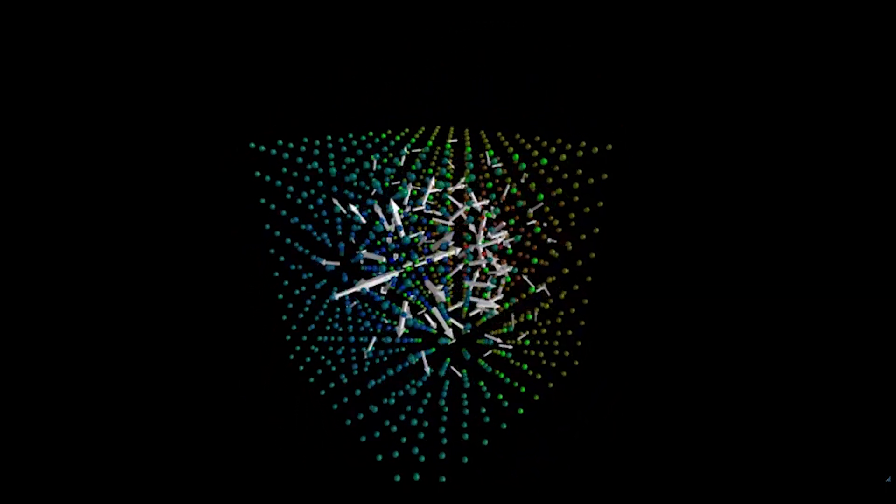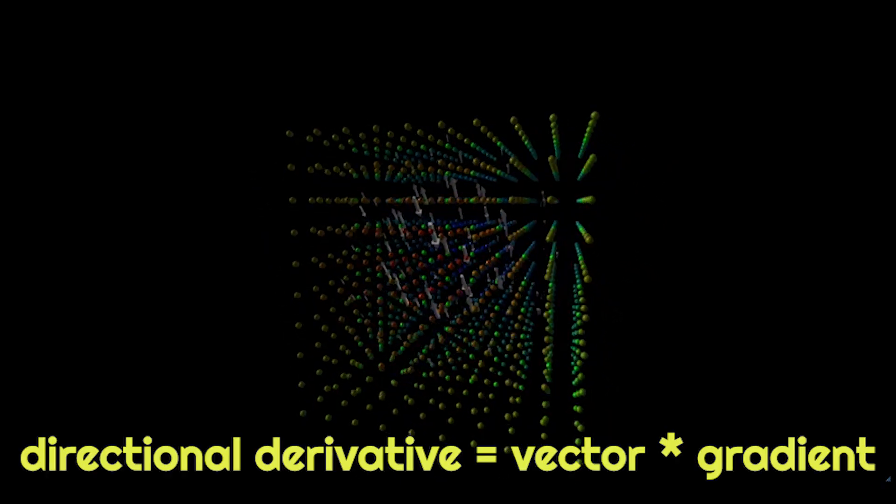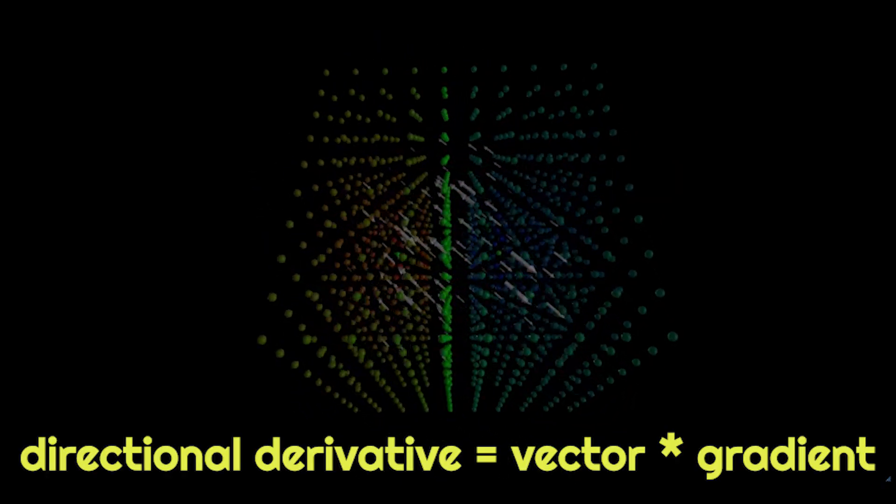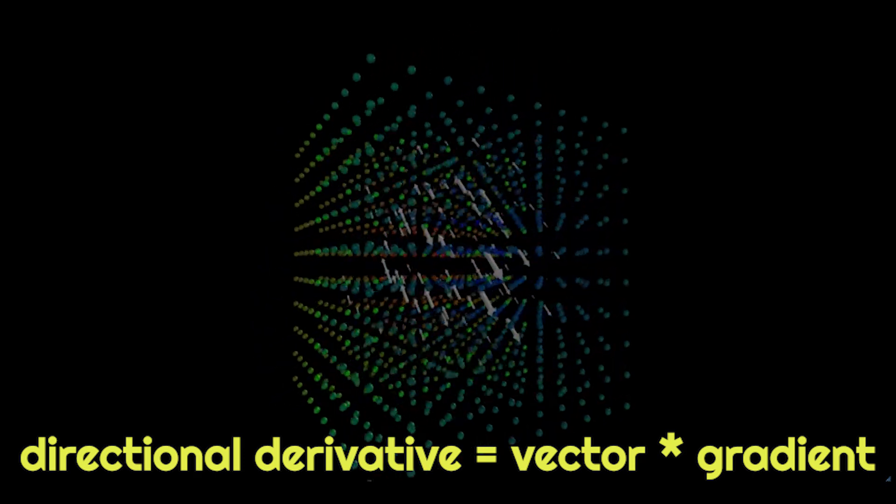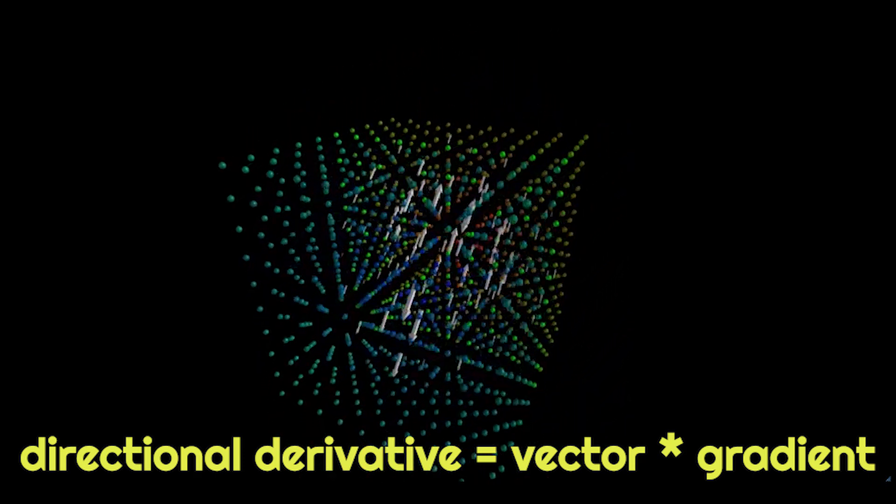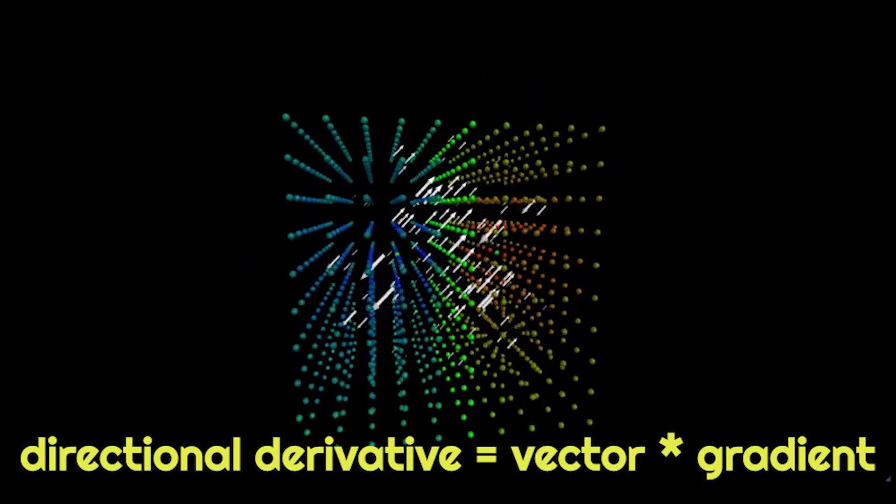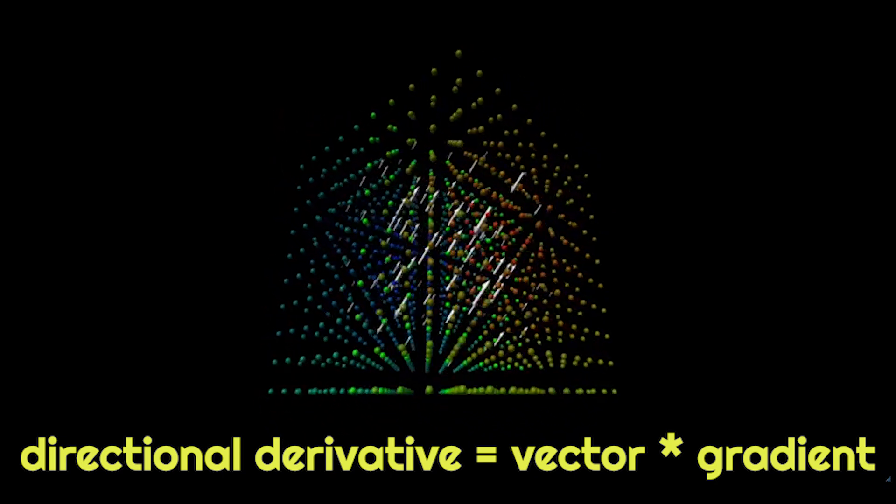But sometimes you want to know the derivative in a particular direction. For this we need our friend from the previous video the dot product. If you take the dot product of a vector with the gradient at a point in space you can find the slope of the scalar field at that point in that direction. The directional derivative is an answer to the question of if I move in this direction what will the slope be.